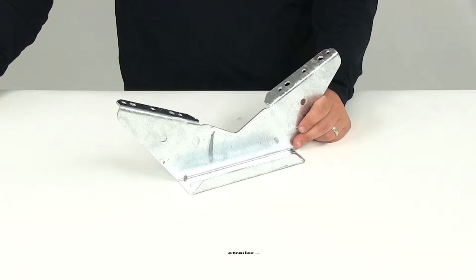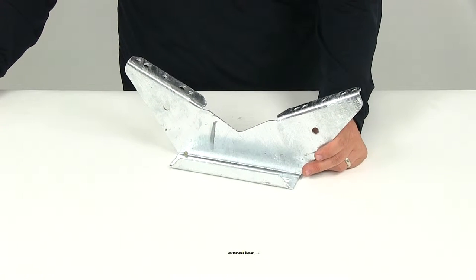Today we're going to be taking a look at part number CE 26244G. This is the CE Smith V-Wing bolster bracket for pontoon boat trailers.